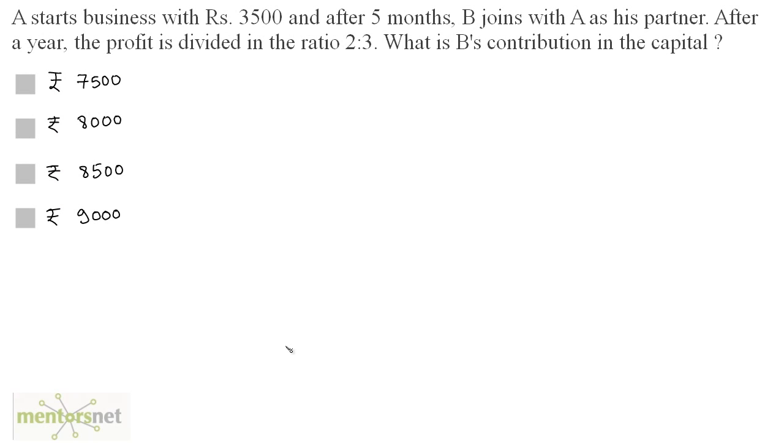A starts business with 3500 rupees and after 5 months B joins with A as his partner. After a year the profit is divided in the ratio of 2:3. What is B's contribution in the capital?